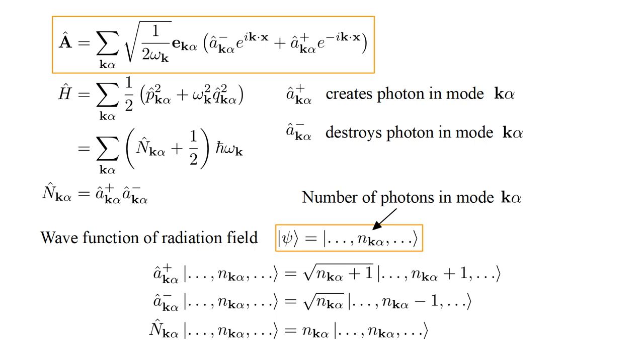Our field quantization technique led us to a quantum description in which the field is an operator and the wave function is a list of the number of photons present in each electromagnetic mode. The field operator is a sum over all possible modes of an expression containing one destruction and one creation operator for the corresponding photons.